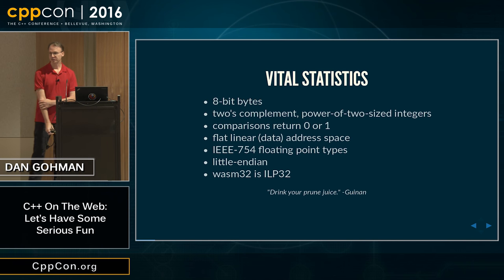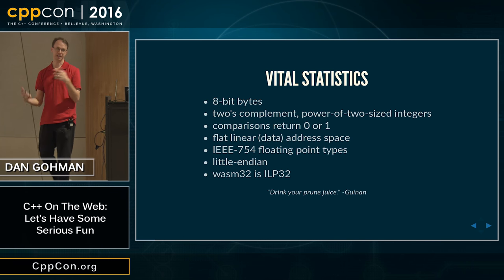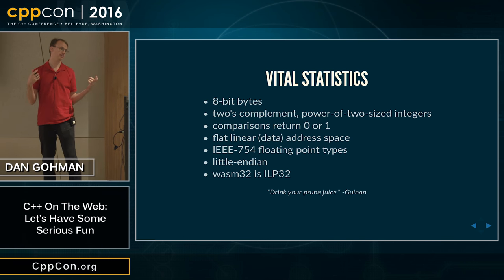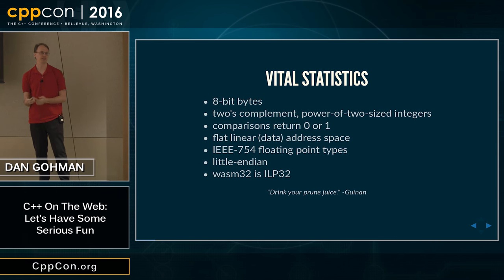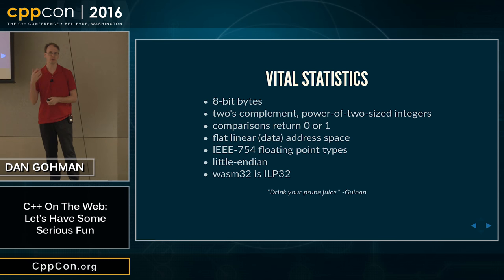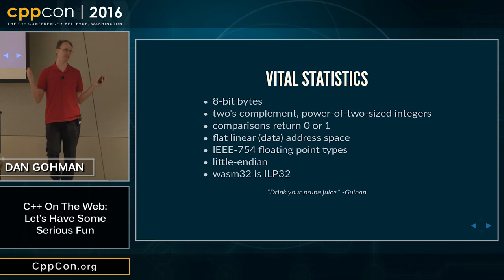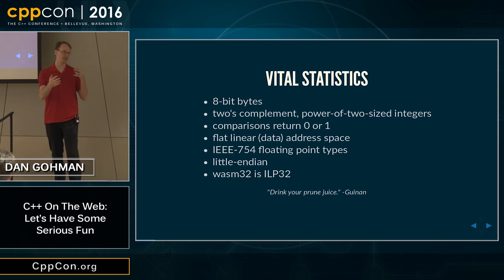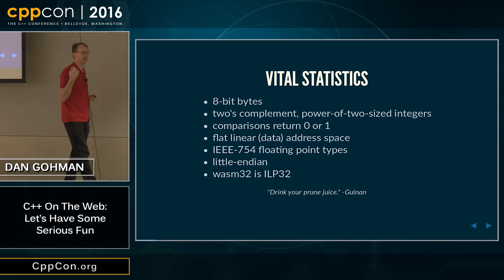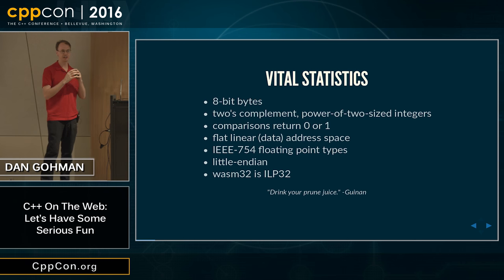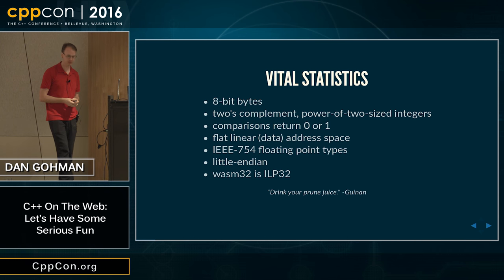Endianness is something we can talk a lot about. The advantages of either one are definitely overshadowed by the fact that if you have one endianness across your entire ecosystem, that's way better than mixing them. So we've picked little endian, and we've said the entire ecosystem is going to be little endian, which eliminates a lot of problems.